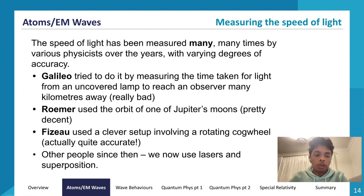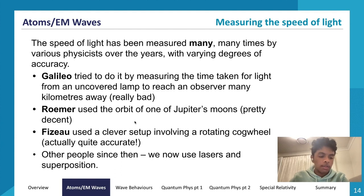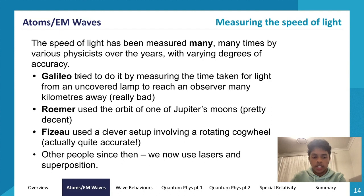Foucault improved on Fizeau by replacing the cogwheel with a rotating mirror. Light hit the rotating mirror, reflected to a distant mirror, returned, and hit the now-rotated mirror at a deflected angle. By measuring that angle and knowing the geometry, Foucault calculated the speed of light. Contemporary methods now use lasers and oscilloscopes for much greater precision.